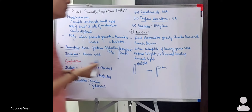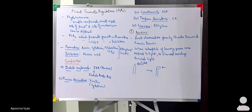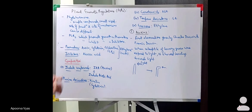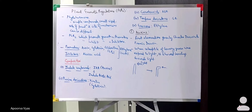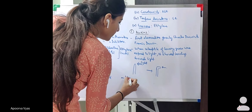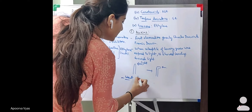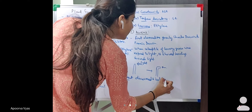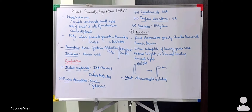Darwin and son could not figure out the particular substance causing the bending towards light. Then another scientist, Went, came along and discovered and isolated the auxins.